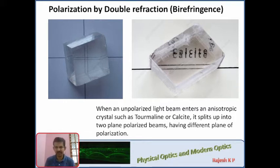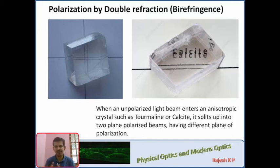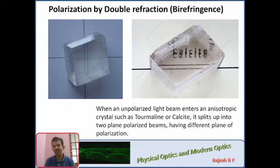When unpolarized light enters the crystal, it will split into two beams. The two beams that emerge are plane polarized light. The plane of polarization of each beam is different — they are mutually perpendicular to each other. This phenomenon is called birefringence, or double refraction, and it occurs in anisotropic crystals.